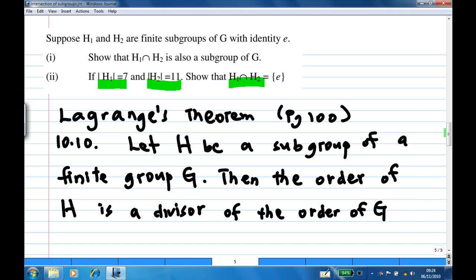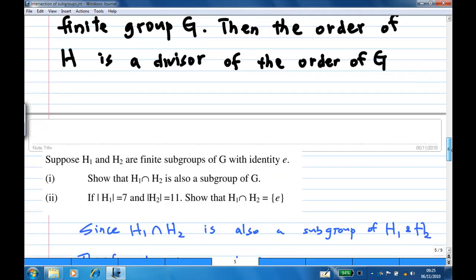For this, we are going to use Lagrange's theorem, which can be found on page 100 of the text, theorem 10.10. It says that let H be a subgroup of a finite group G. Then the order of H is a divisor of the order of G. And this is how we go about this.